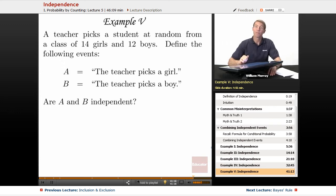In our last example, we have a teacher picking a student at random from a class of 14 girls and 12 boys. So our two events here are A being the event that the teacher picks a girl, and B is the event that the teacher picks a boy. The question is, are A and B independent?